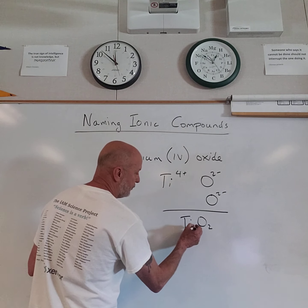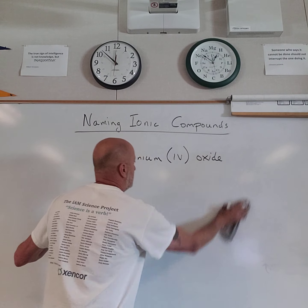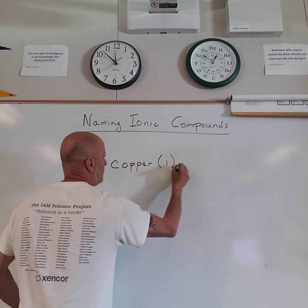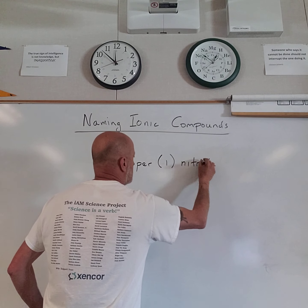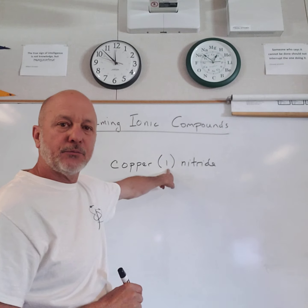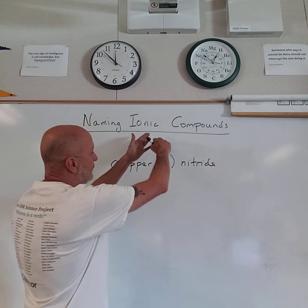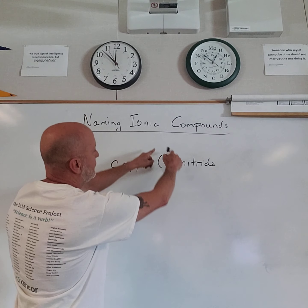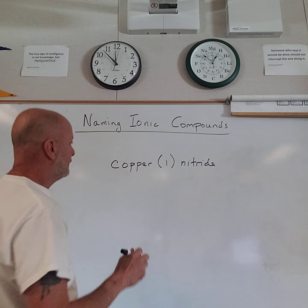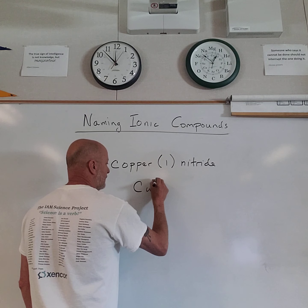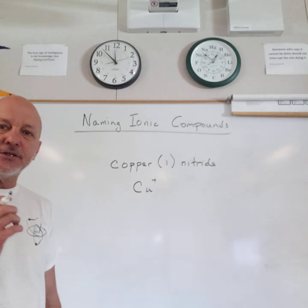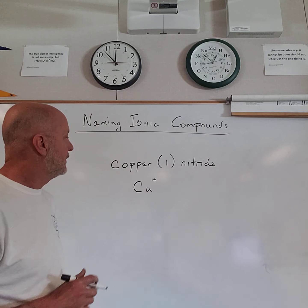When writing the formula, notice I don't write Ti₁ — if there's only one of an atom, we don't write the subscript one. However, if the transition metal ion has a one-plus charge, I do still need to put Roman numeral I in the name. I'm also consistently surrounding the Roman numeral with parentheses to make clear that it is the Roman numeral, not a subscript.